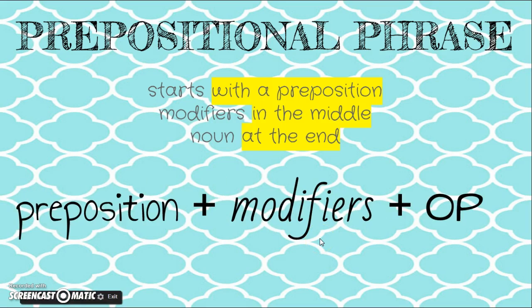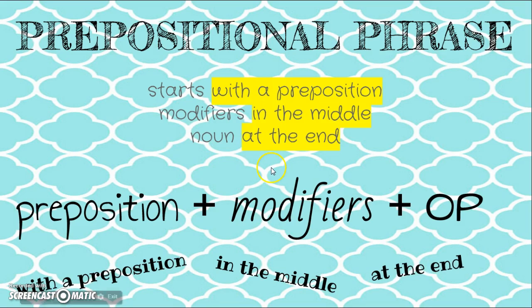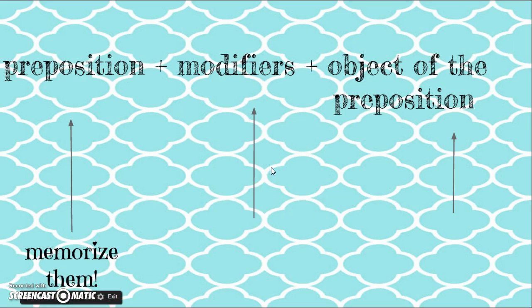We could use a formula to set this up. Just like in math, if you have a formula to figure out the circumference of a circle, you don't have to memorize every single circumference — you just need a formula. So our formula is: you start with a preposition, you can have modifiers in the middle, and then you end with an object of a preposition. A preposition is a set list of words, and I have you memorizing them in class. We have three different sets, and once you memorize them, it's going to make it a lot easier to identify them in sentences.